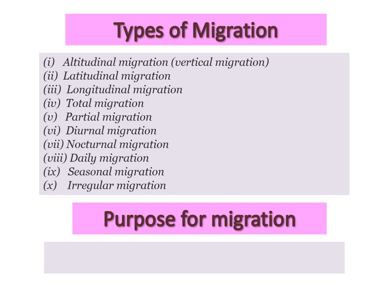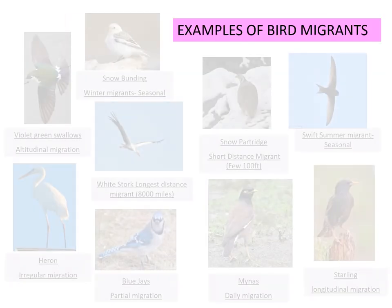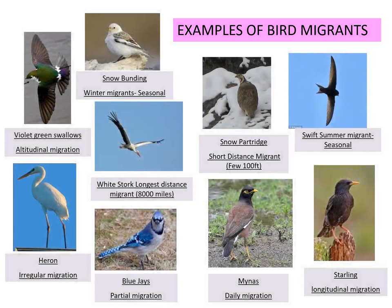The purpose of migration is breeding, feeding, and finding suitable climatic conditions. Some examples of different types of migration: altitudinal migration is shown by violet-green swallows; winter migration by snow buntings; irregular migration by heron; partial migration by blue jays; long distance migration by white storks; short distance migration by snow partridge; and seasonal migration by swifts. Long distance migration is also shown by loons.